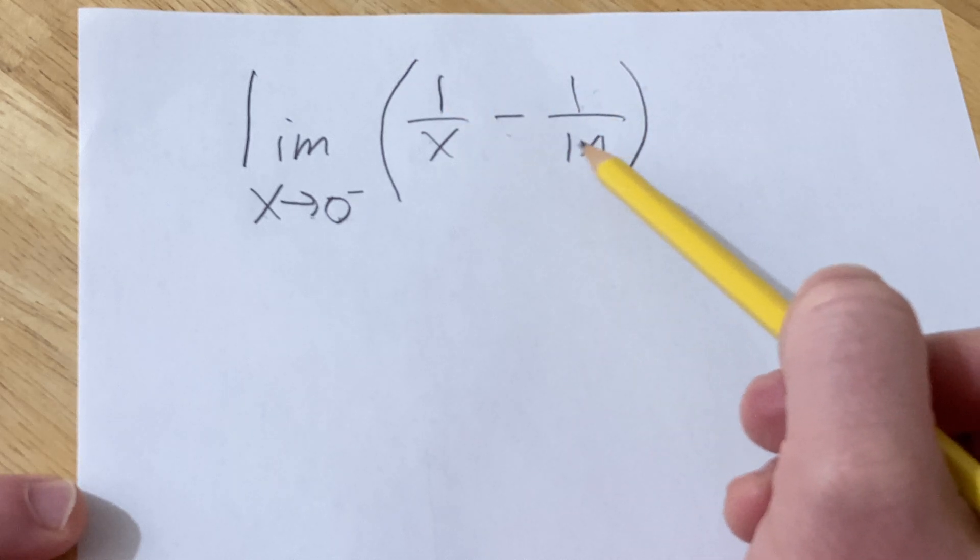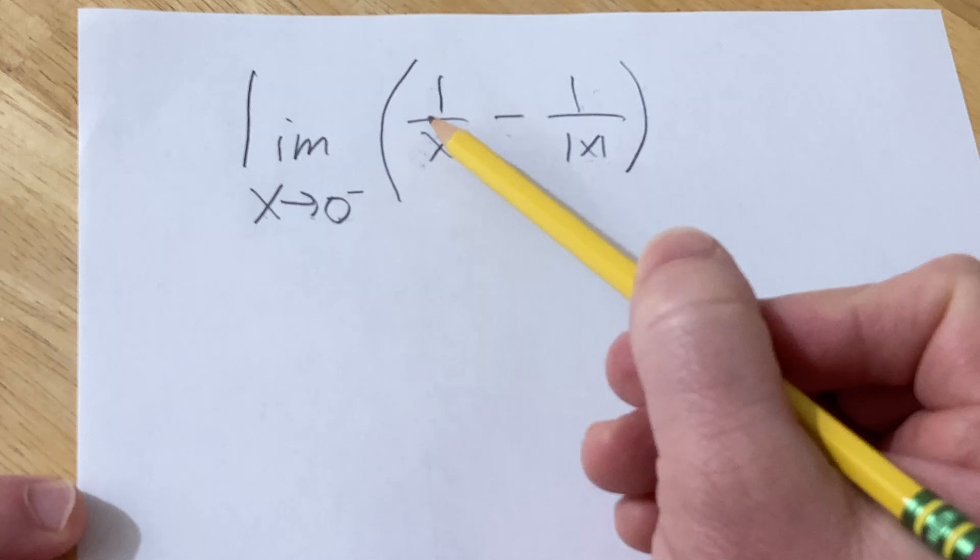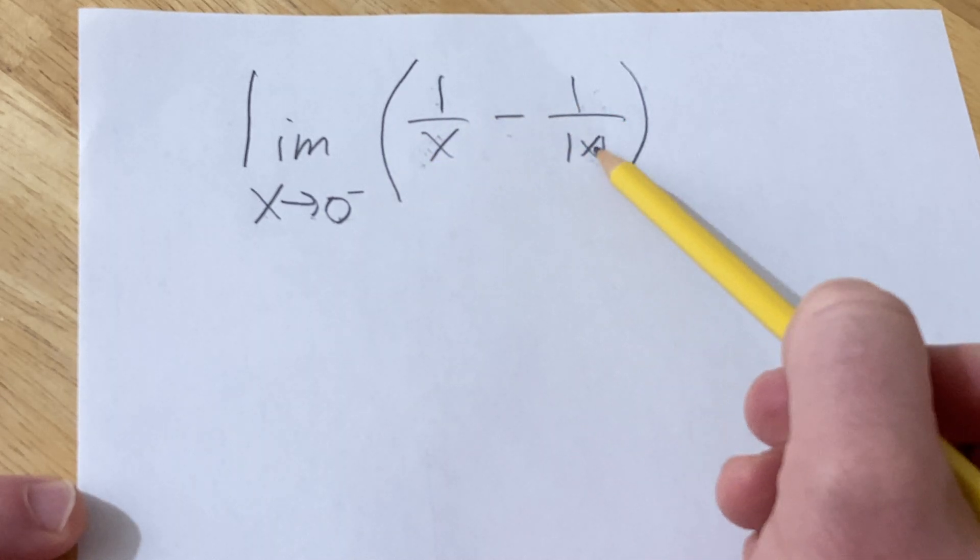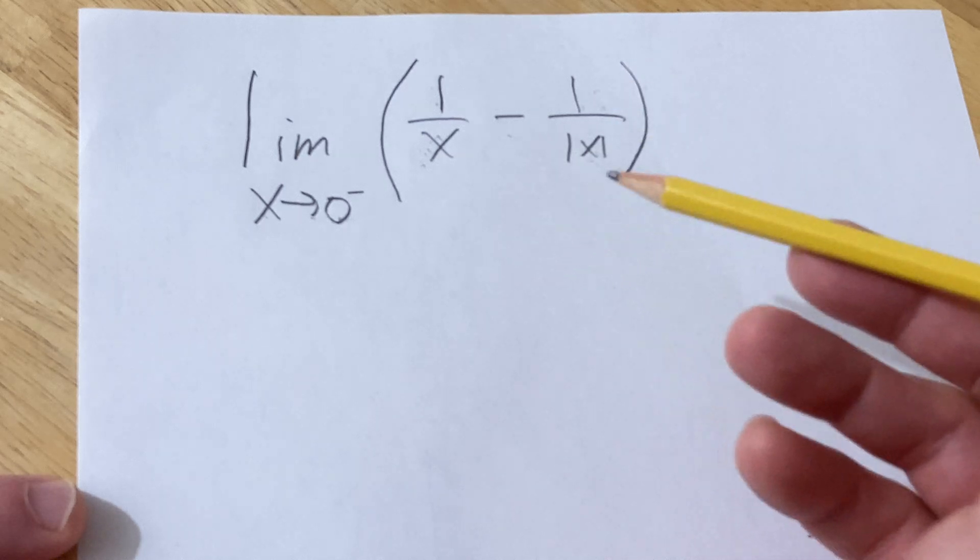So the first step is to think about what happens when you plug in 0. When you do that you end up with 1 over 0, 1 over 0, so that's no good. So we have to try something else to see if we can get some type of solution.